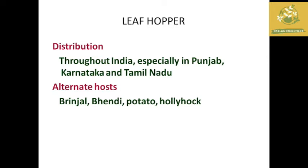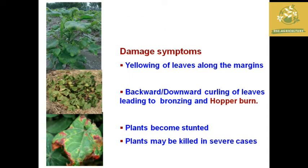The first pest we are going to see is the leaf hopper, whose distribution is throughout India, especially in Punjab, Karnataka and Tamil Nadu. Some alternative hosts for leaf hoppers are brinjal, bhendi, potato and hollyhock. The major damaging symptom is the 'hopper burn' symptom, where bronzing and backward or downward curling of leaves is seen.